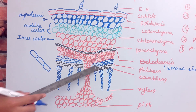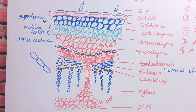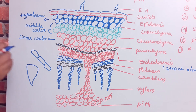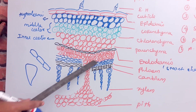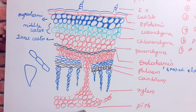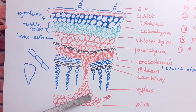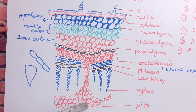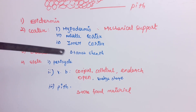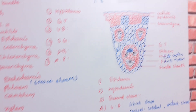Between the phloem and xylem there is cambium, making this an open vascular bundle. The pith is the central region of the dicot stem and is made up of parenchyma cells with intercellular spaces. This completes the description of the dicot stem.